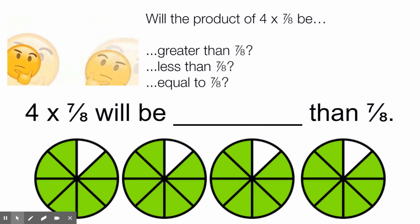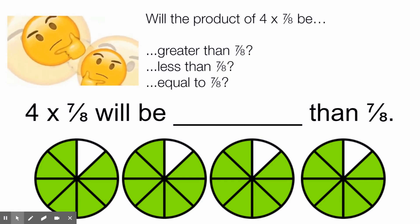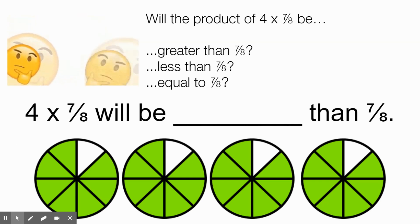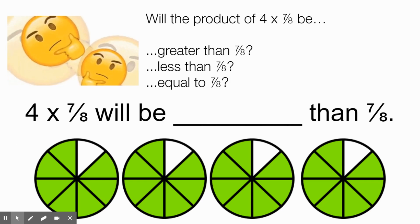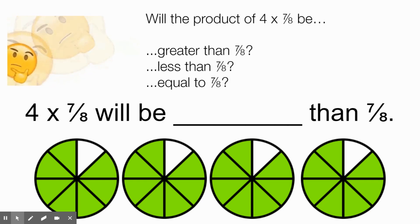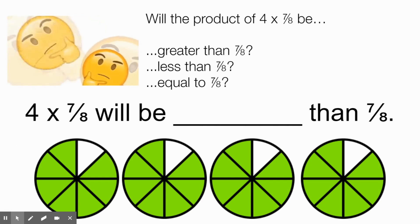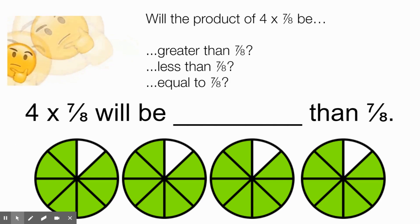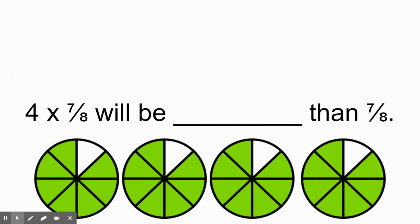Here's a model — here's four groups of seven-eighths. If we look at that, is four groups of seven-eighths greater than one group? Is it less than one group? Or is it equal to one group? Four times seven-eighths means four groups of seven-eighths. Four groups is greater than one group.